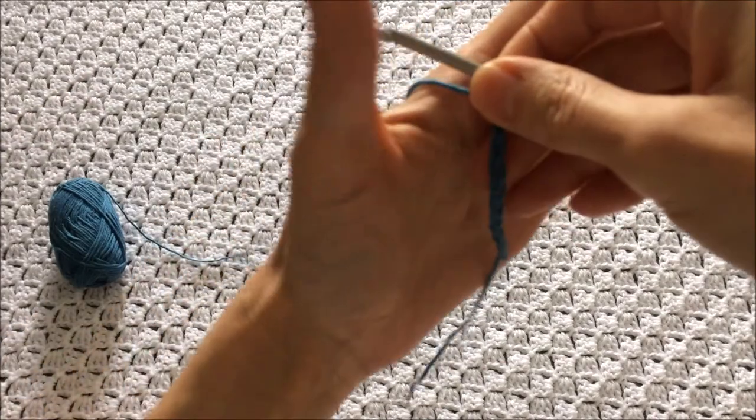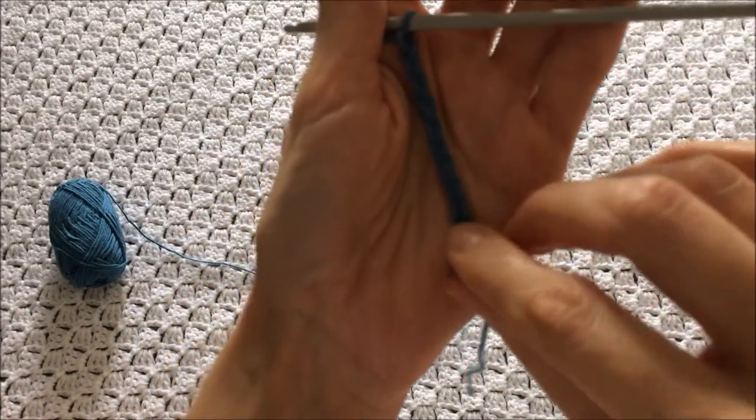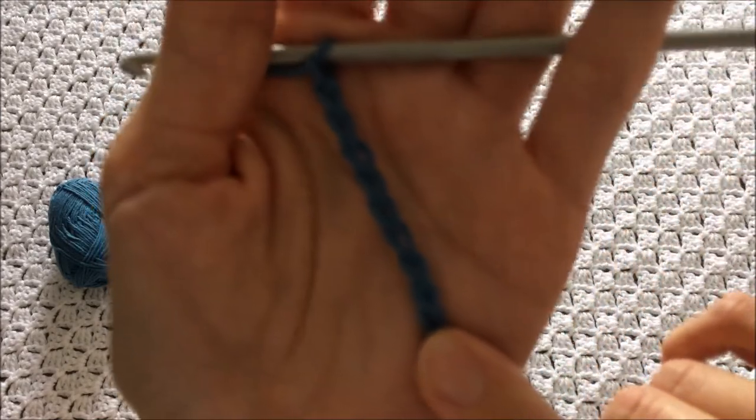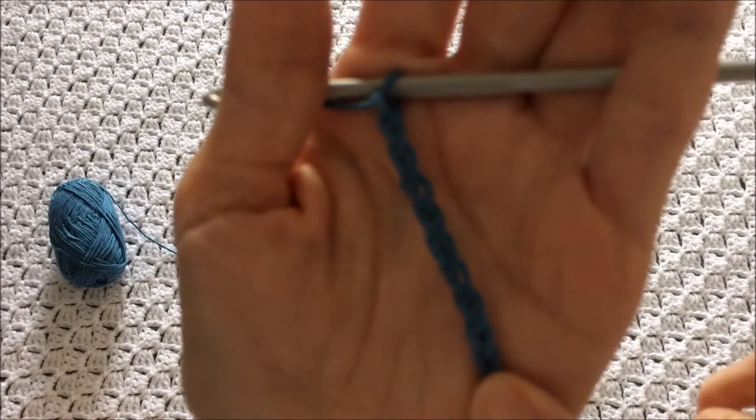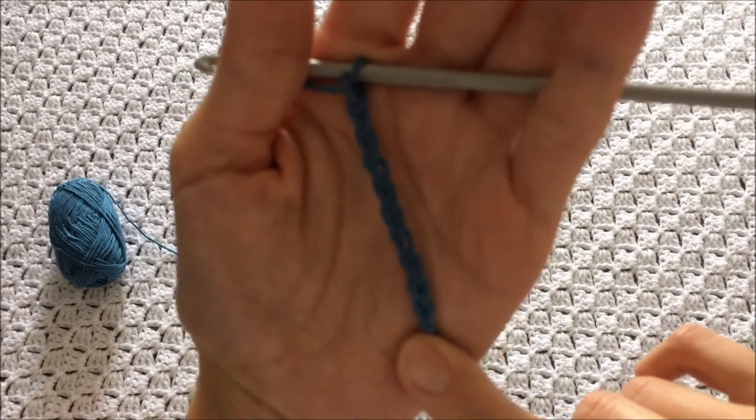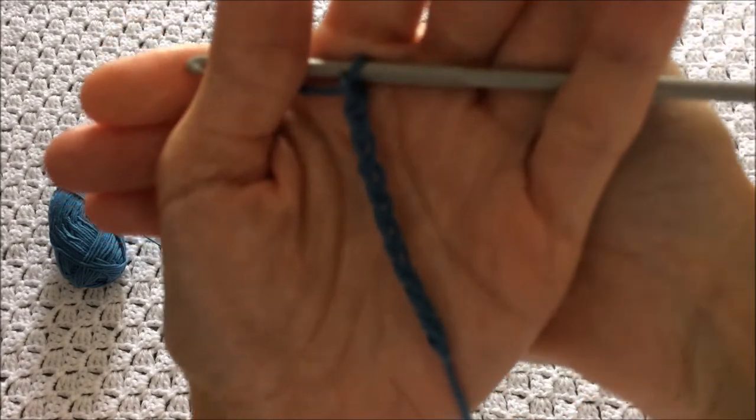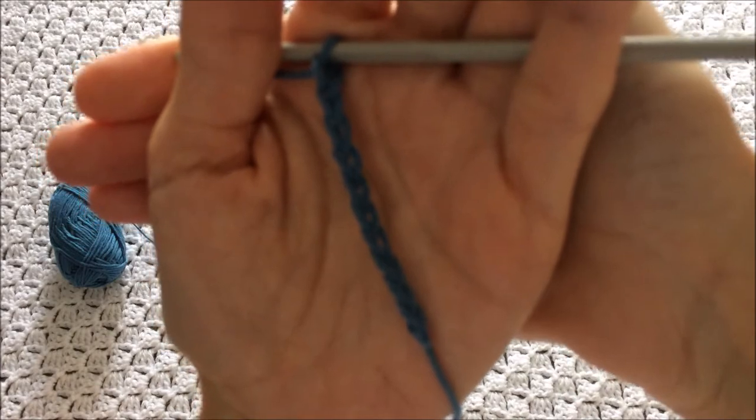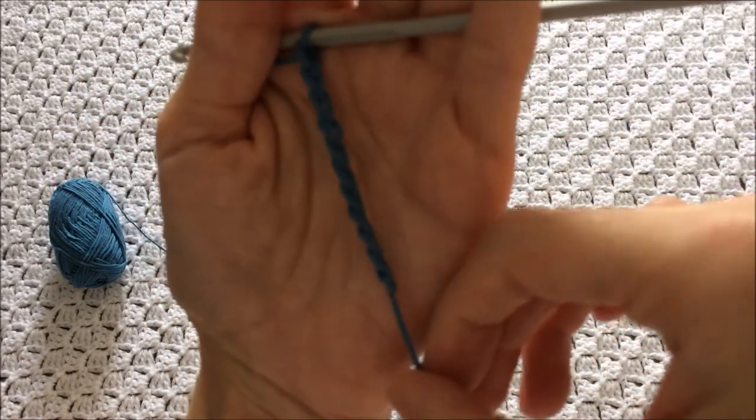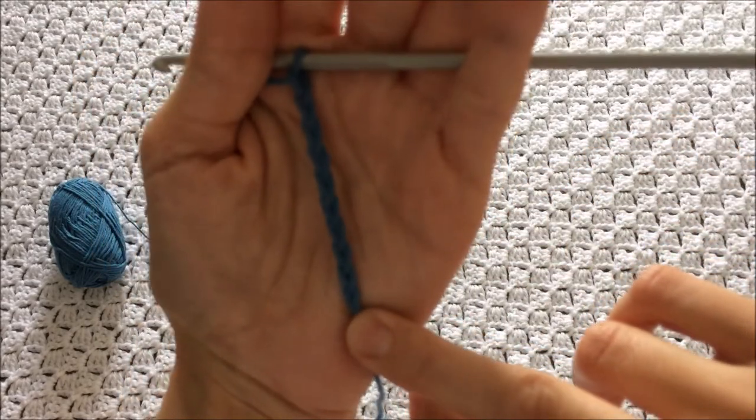And now I've got ten chains on my hook, so if I can just show you. If it'll focus, each one of those V shapes is a chain. So I've got ten chains on my hook, and that is how you do a slipknot and that is how you do a chain.